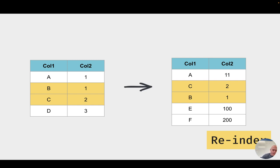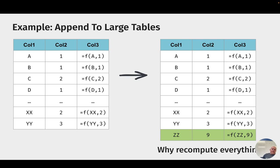Let's look at a case to reinforce why computing on changes is important. Say you have a table that may be a billion rows long and you add one new row. You don't want to re-compute the entire table just because one new row is added — why not just re-compute that row? It is universally true that computing on the changes ends up being much more efficient than re-computing on the entire table.